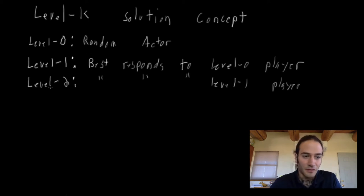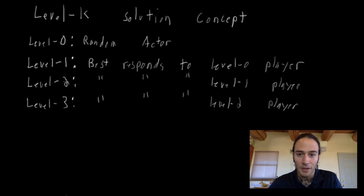Let's do a level three just for fun. Now, as you can imagine, a level three best responds to a level two player. So now the rabbit hole gets deeper. A level three player says, I think that everybody else is a level two player who thinks that everybody else is a level one player who best responds to everybody else being a random actor.